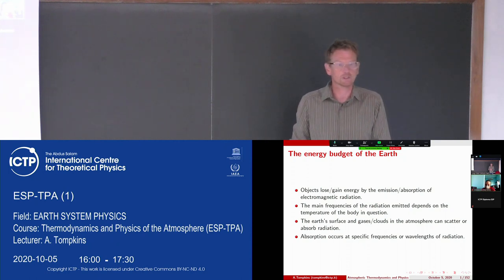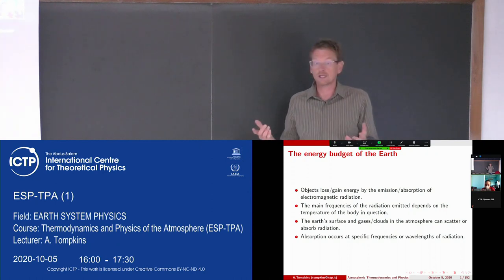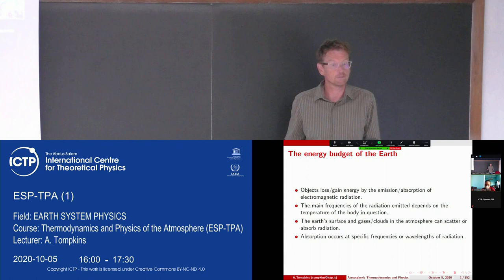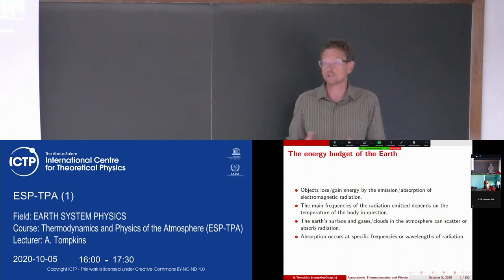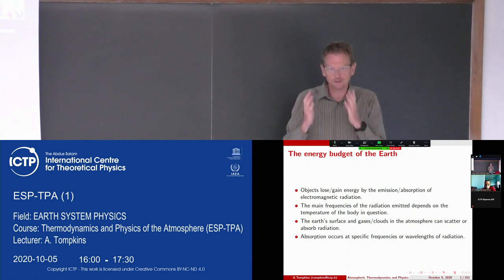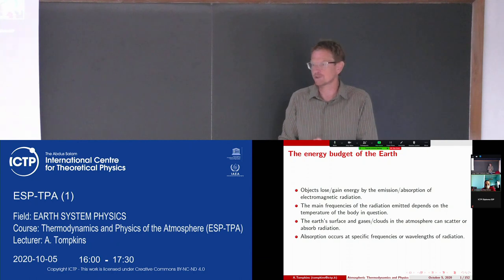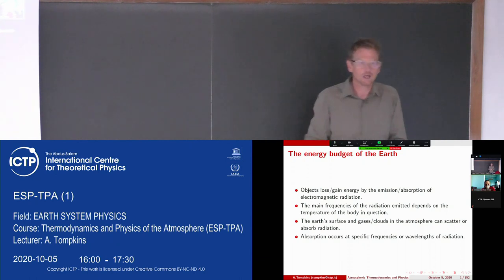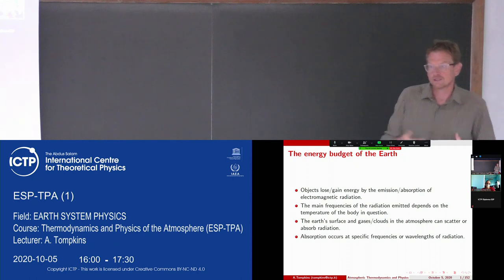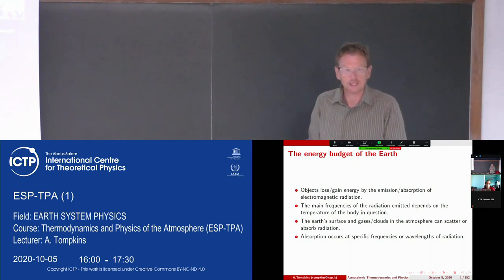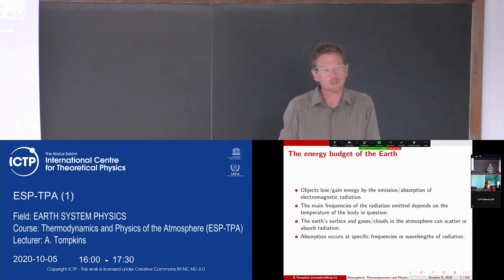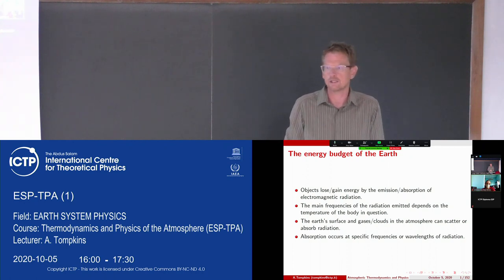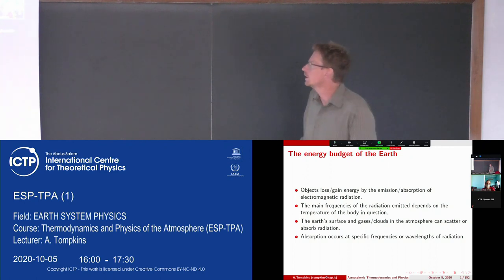We then go on to talk briefly about energy transfers — first in the boundary layer near the surface, and then through the whole atmosphere. Finally, we zoom in on the physics of clouds in the last section, looking at cloud formation and rainfall formation. We'll start to understand why the vast majority of clouds form and dissipate without producing any rainfall, while some clouds, as we've seen in the last few days, can produce very intense precipitation.